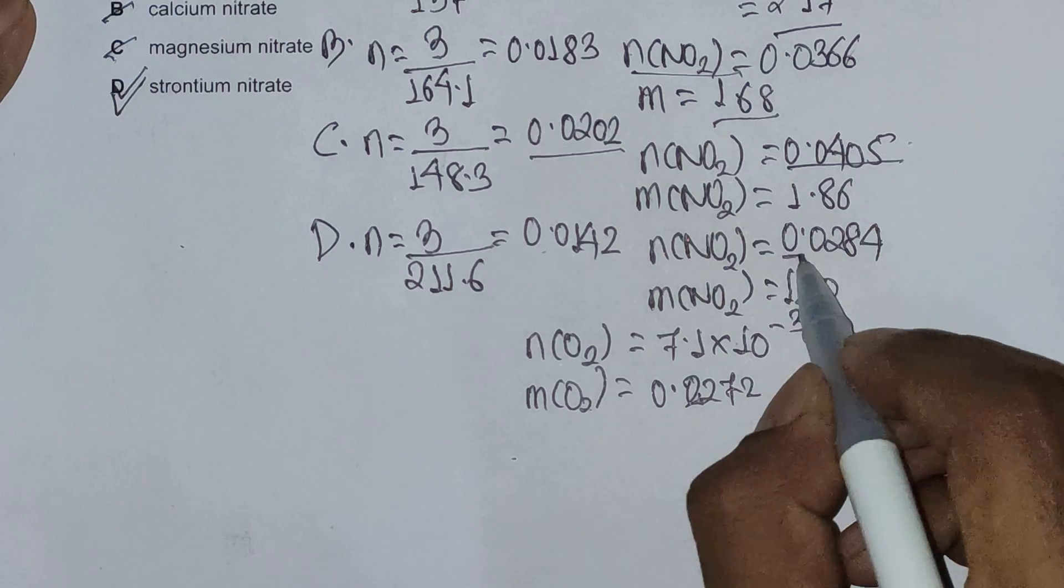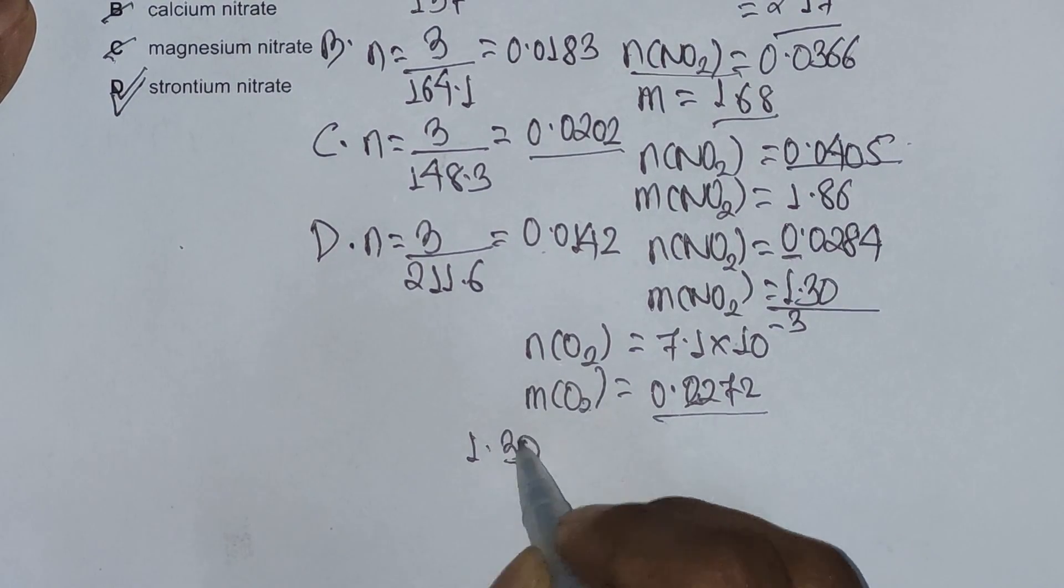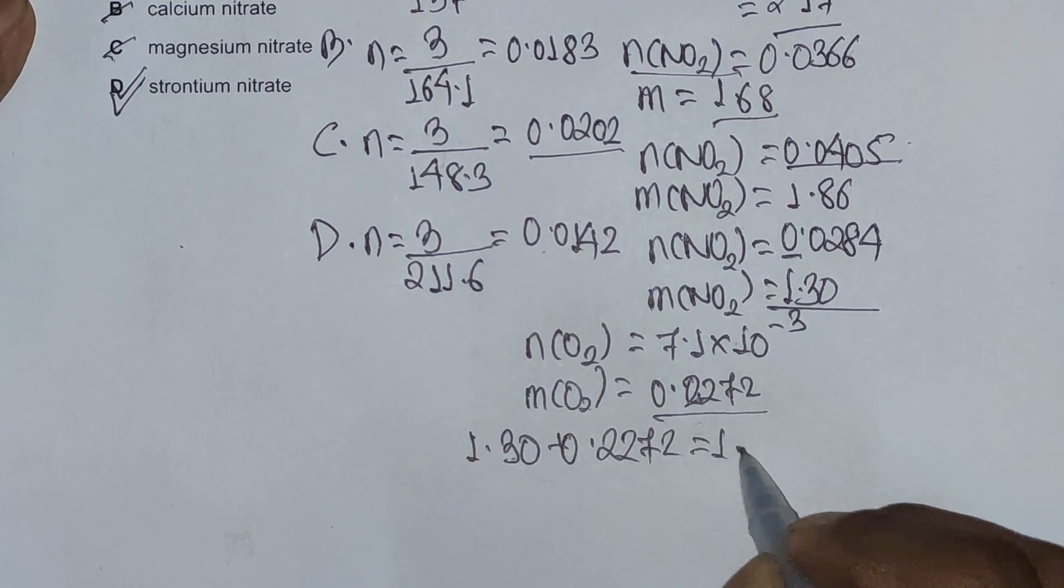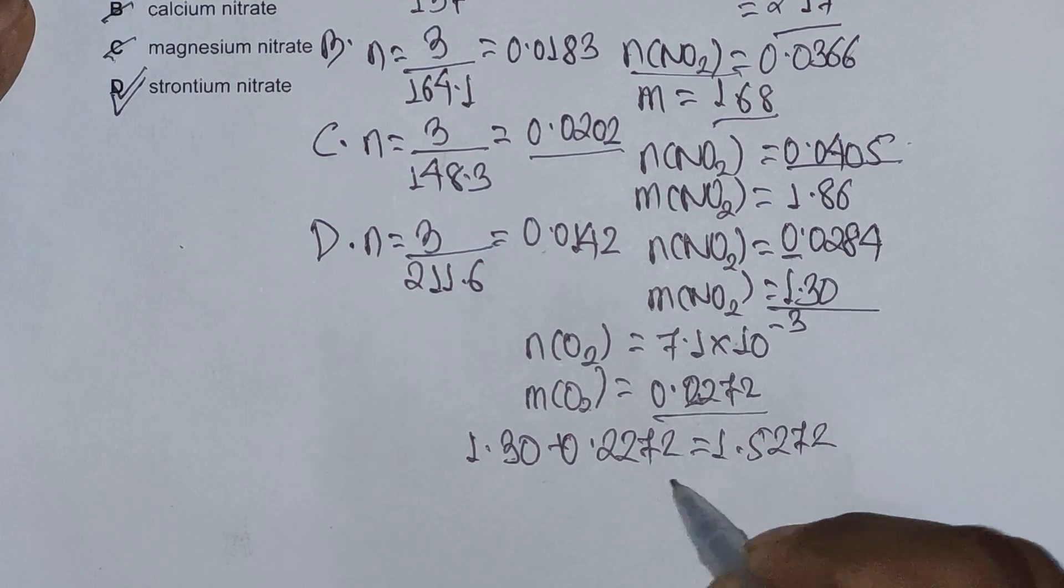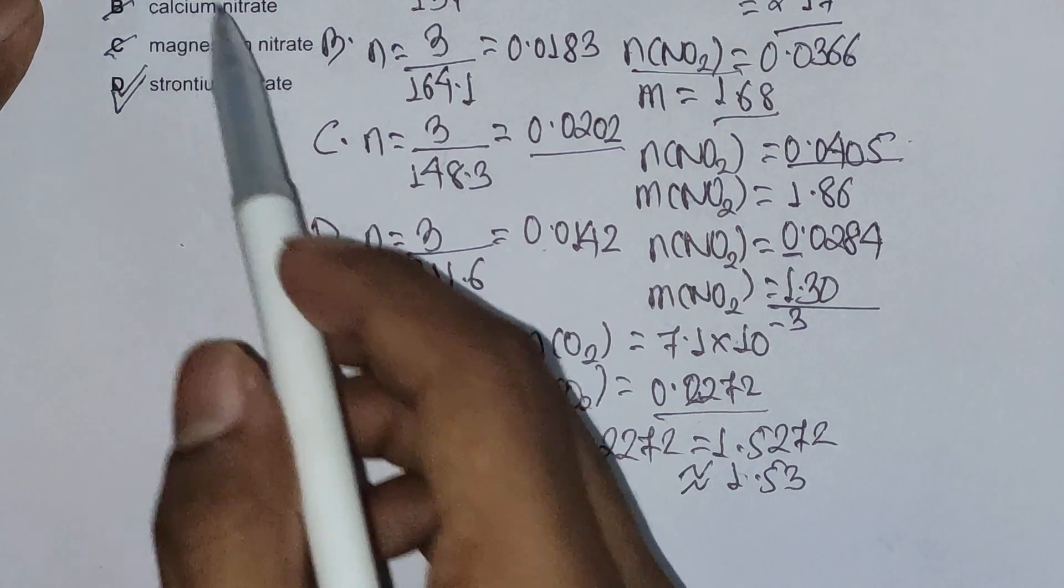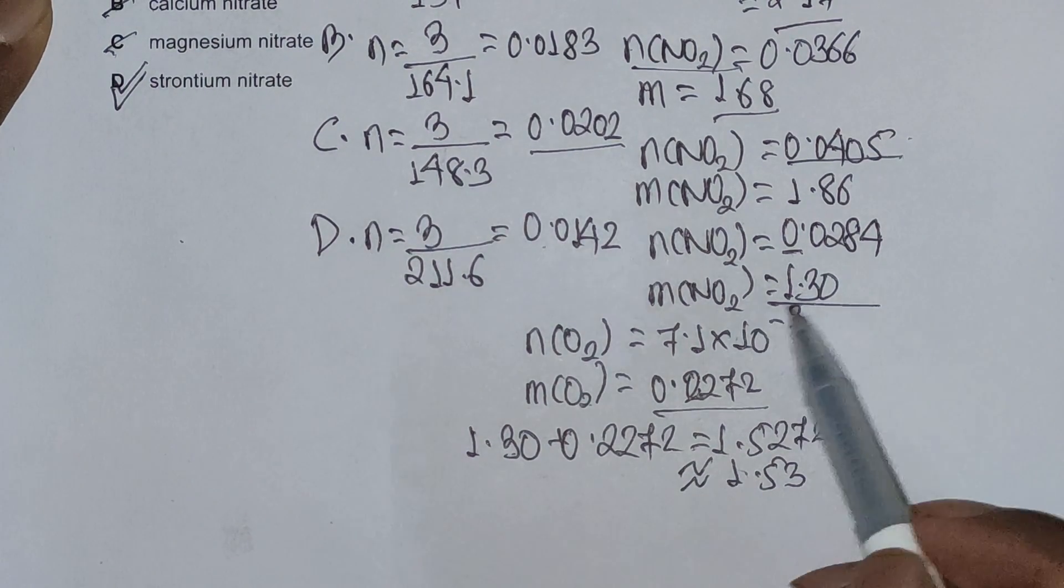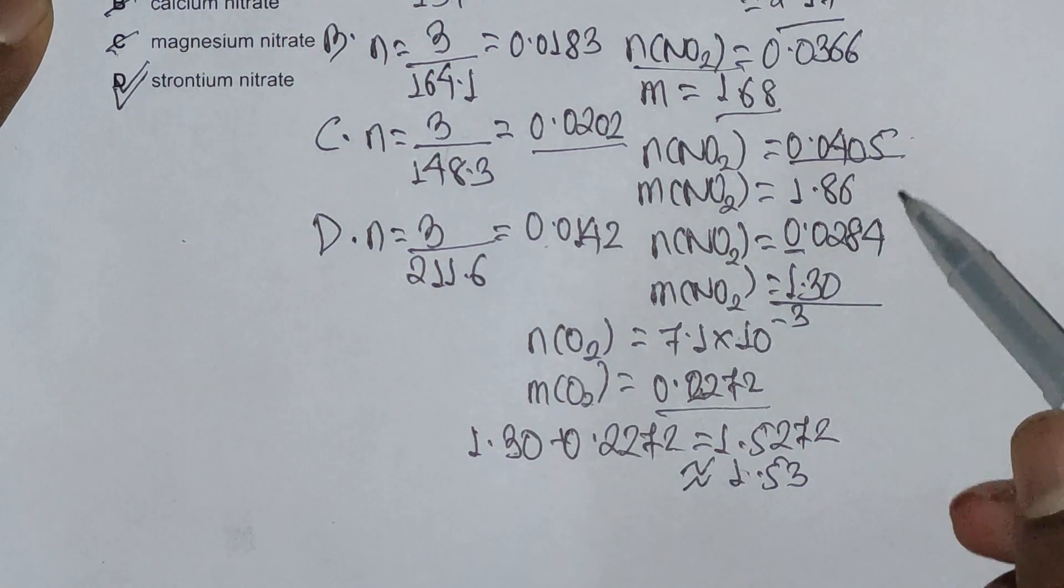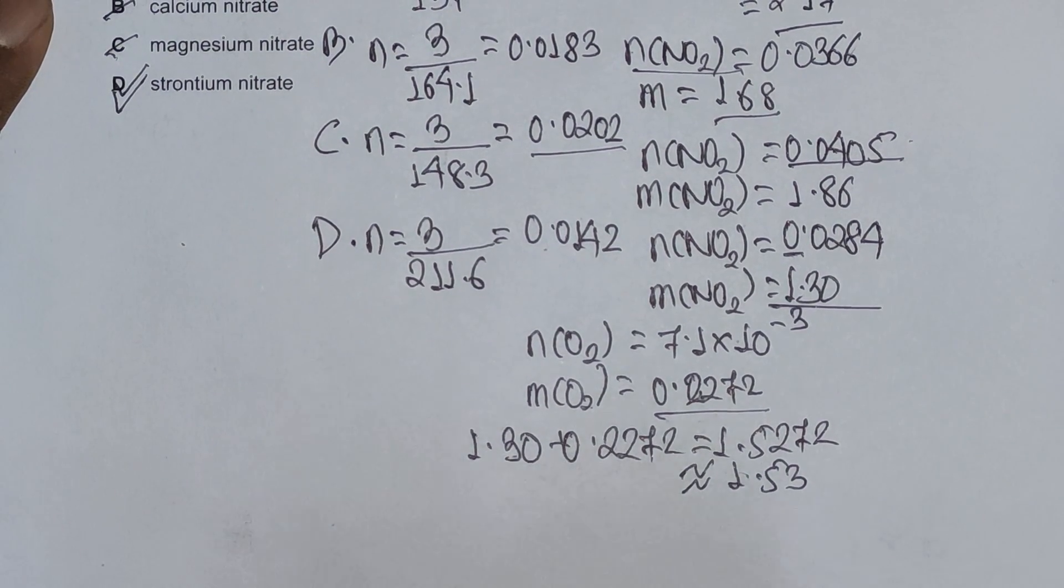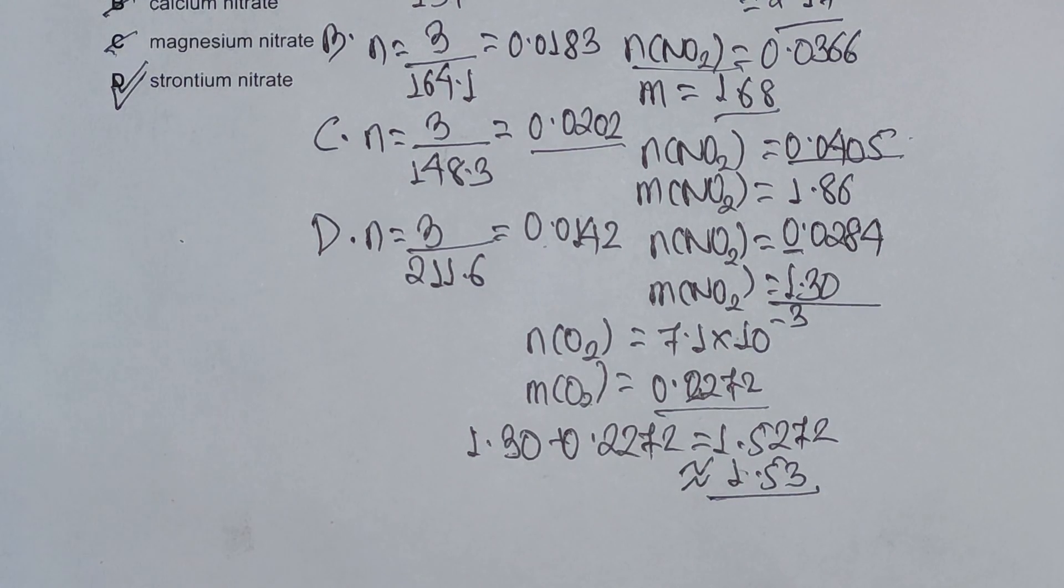Now if we sum these two - 1.30 plus 0.2272 is 1.5272, which is approximately equals to 1.53. So decomposing 3 grams of strontium nitrate will give us 1.3 grams of nitrogen dioxide and approximately 0.23 grams of oxygen, which amounts to 1.53, verifying D is the correct answer.